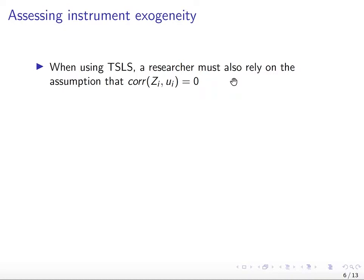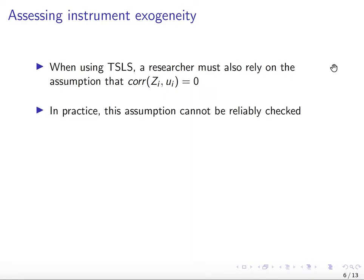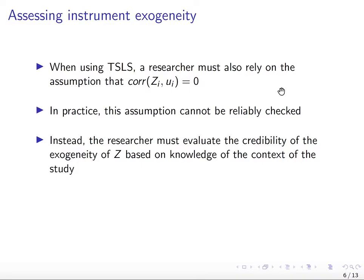The exogeneity condition is a bit trickier because there's no rule of thumb about how you're going to define this. The assumption is that the correlation between z_i and u_i is zero. How you should think about this is z_i has an impact on y_i only through its effect on x. If it has an impact on y_i through something else, then the correlation between z_i and u_i is not going to be zero. But that's not something you can check.